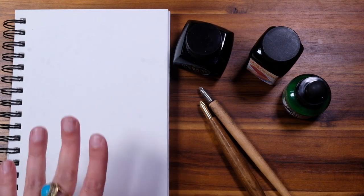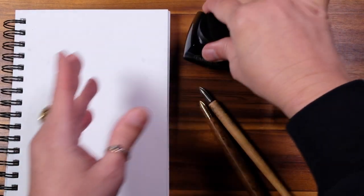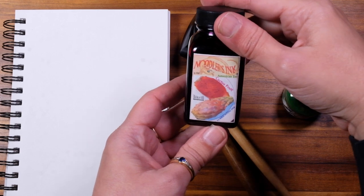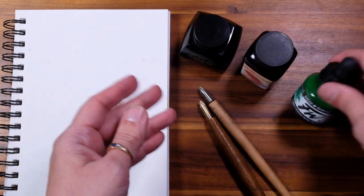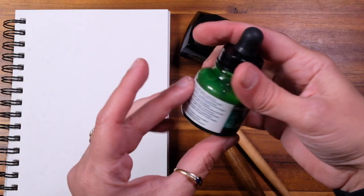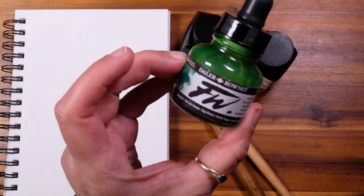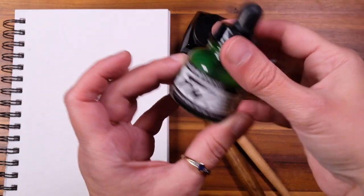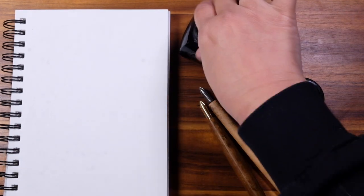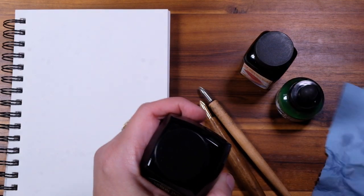All right. All the goodies are lined up. We have some Strathmore Mixed Media paper. We've got Carbon Black ink, a favorite. We have some Noodler's Cactus Fruit. We have some FW Acrylic ink. What color is this? It's a green, but it's their sap green. It took me a second to find that.